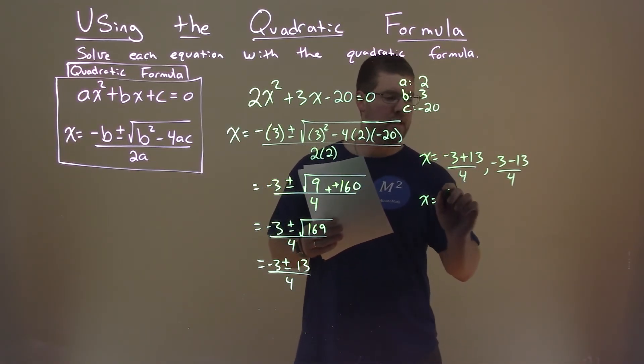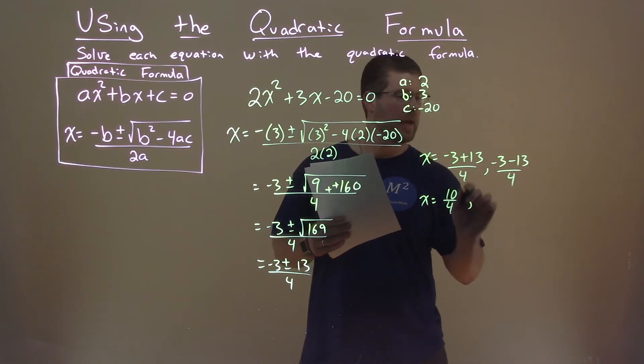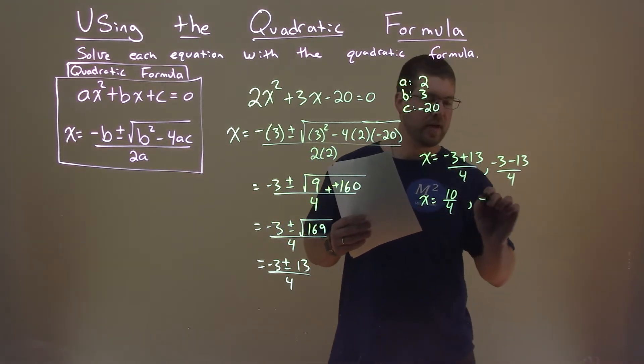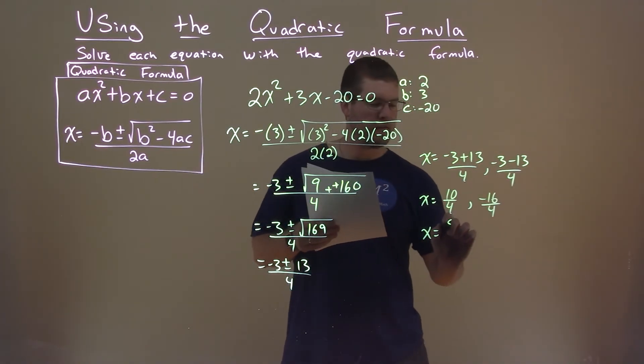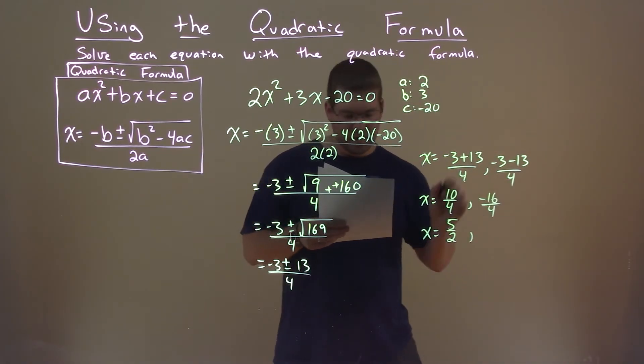Negative 3 plus 13 is 10 over 4, and negative 3 minus 13 is -16 over 4. 10 over 4 simplifies to 5/2, and -16 over 4 is -4.